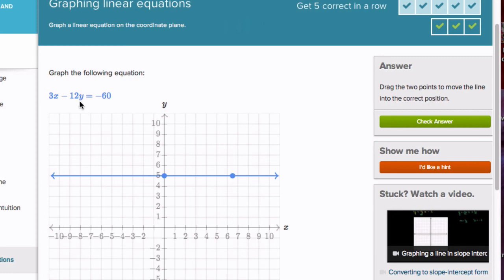So let's choose 6. If I choose 6 for y, that's 3x - 72, because 12 times 6 is 72. So solving for x, we add 72 over here, and -60 plus 72 is 12. 3x equals 12, and x equals 4. That means when y equals 6, x equals 4 here.